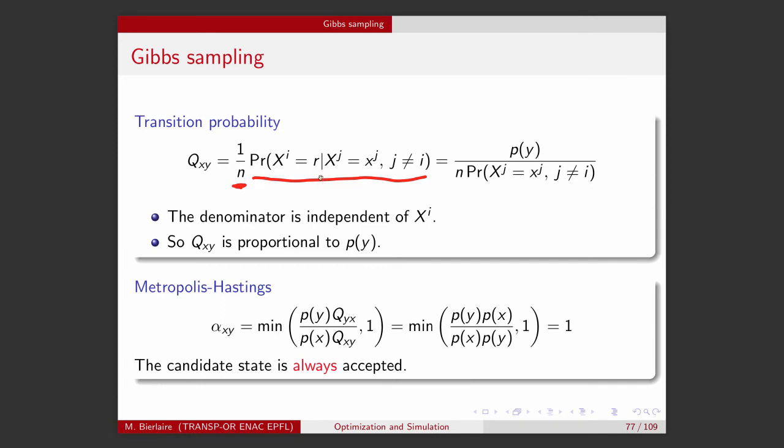But now, this marginal, we can write it as follows. It can be written as the ratio between the full probability of y divided by the probability that the X_j equals x_j for all coordinates except i. It is interesting to write it like this because if you look carefully, this formulation here does not depend on the current state X_i.